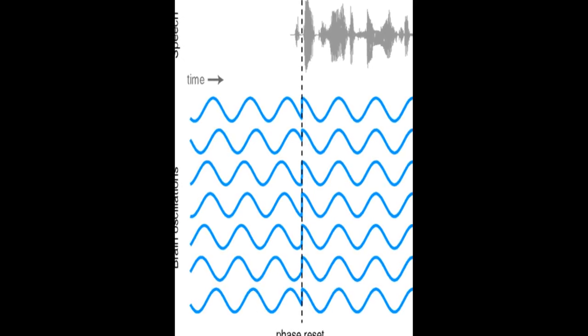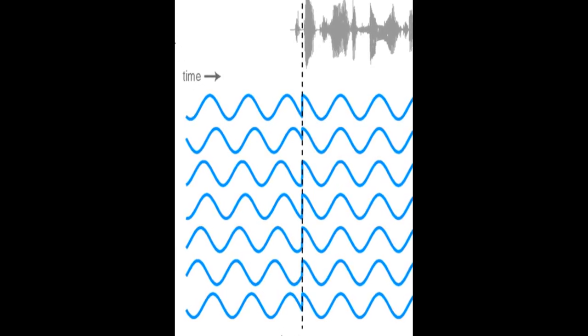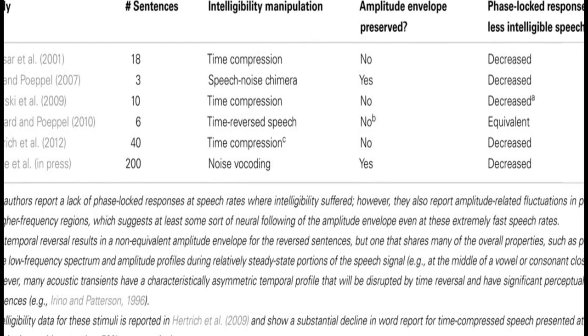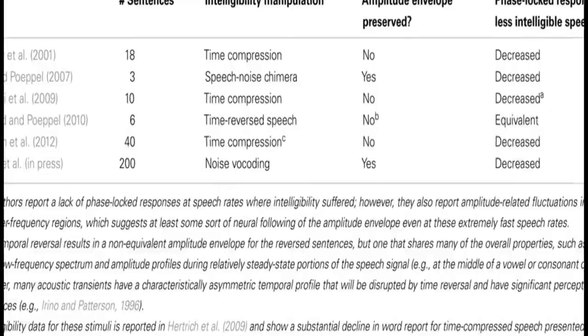The article discusses the importance of speech rhythm and how it is conveyed through amplitude modulations in the slow rhythmic information contained in speech. It explains that listeners rely on this information to understand place and manner of articulation, segmental information, and speech rate.